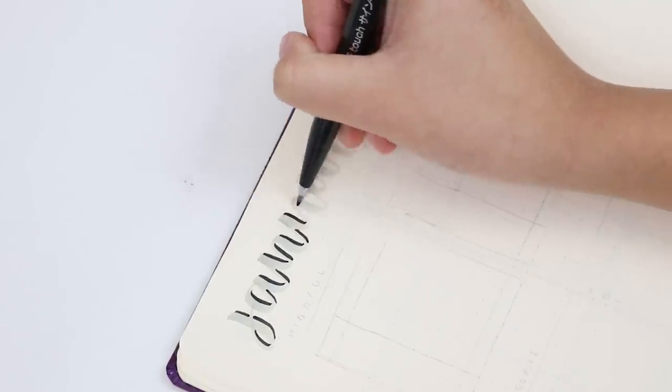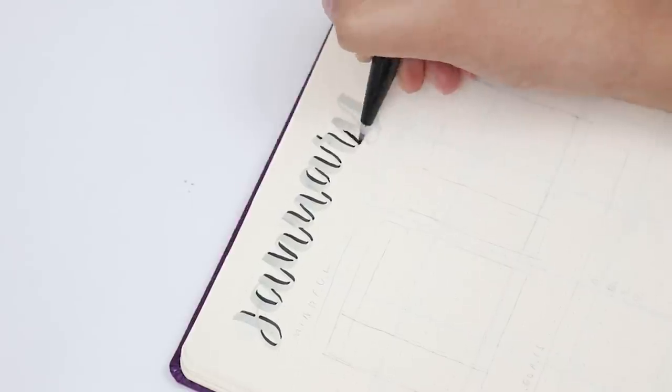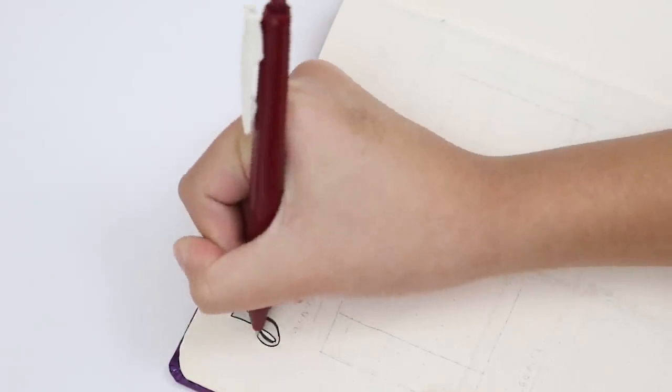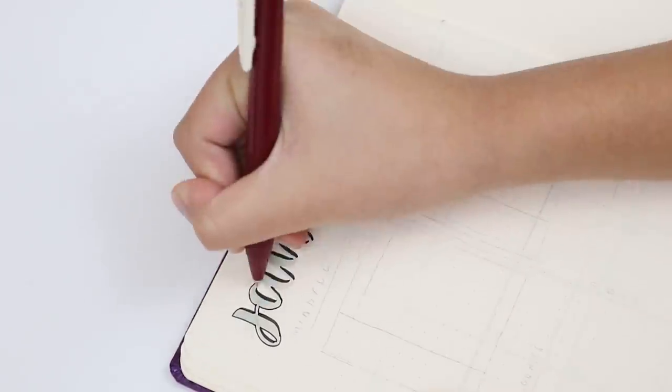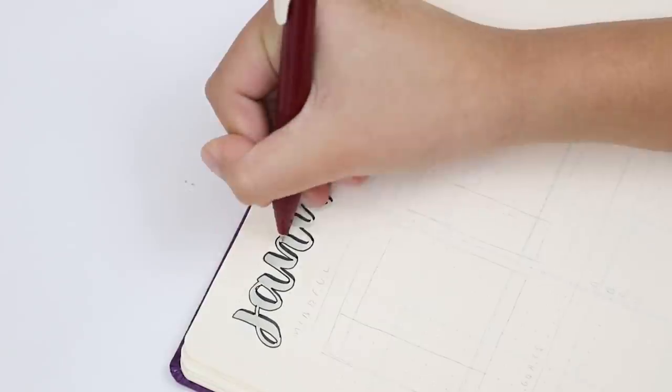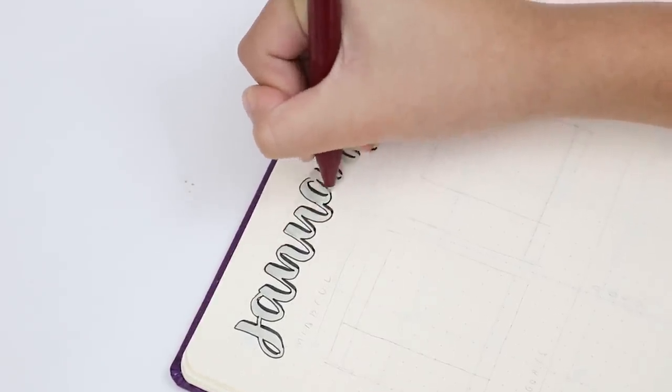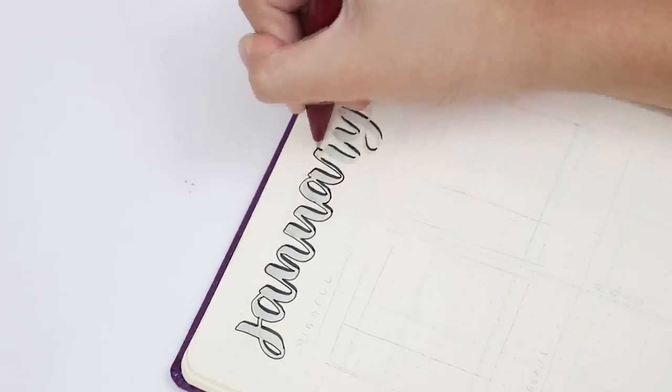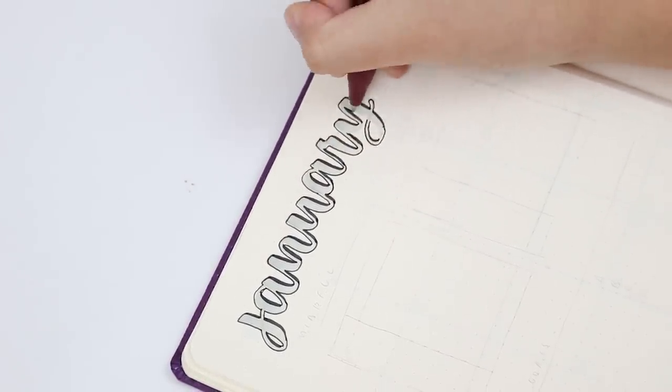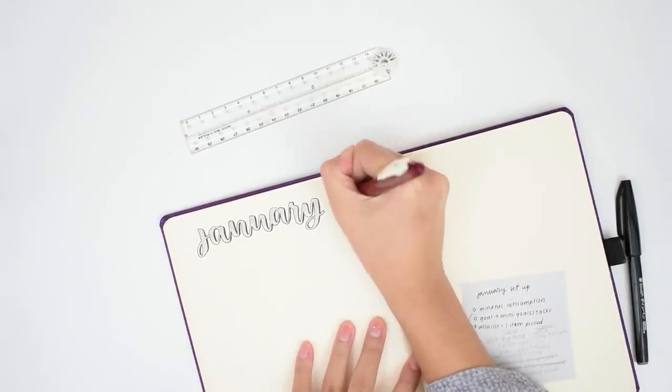I started my January setup by lettering the title for the month using one of my Mildliner brush pens and then adding a drop shadow effect using a black brush pen and a black pen. If you'd like a tutorial for this lettering style you can check it out in my book Study With Me which is all about bullet journaling for students. I also have a slightly less detailed video tutorial called lettering title ideas which I will link in the cards and description as well.